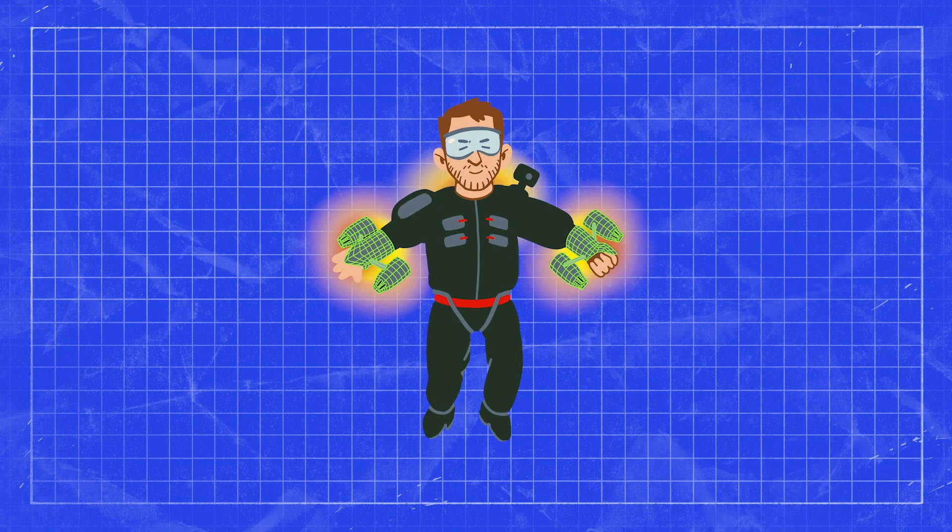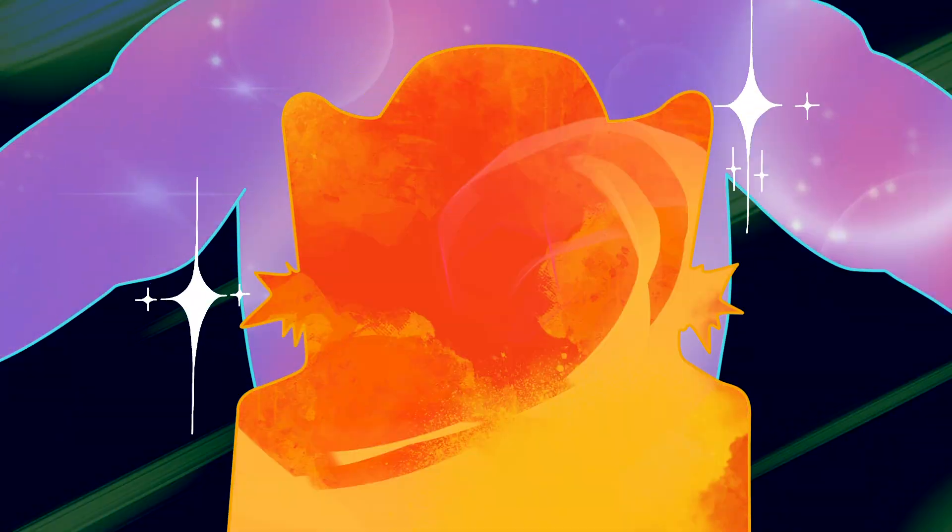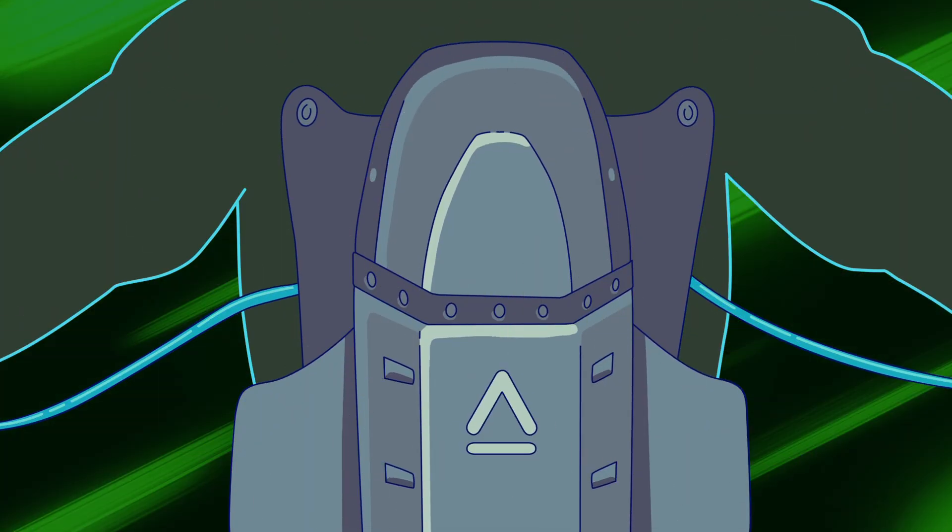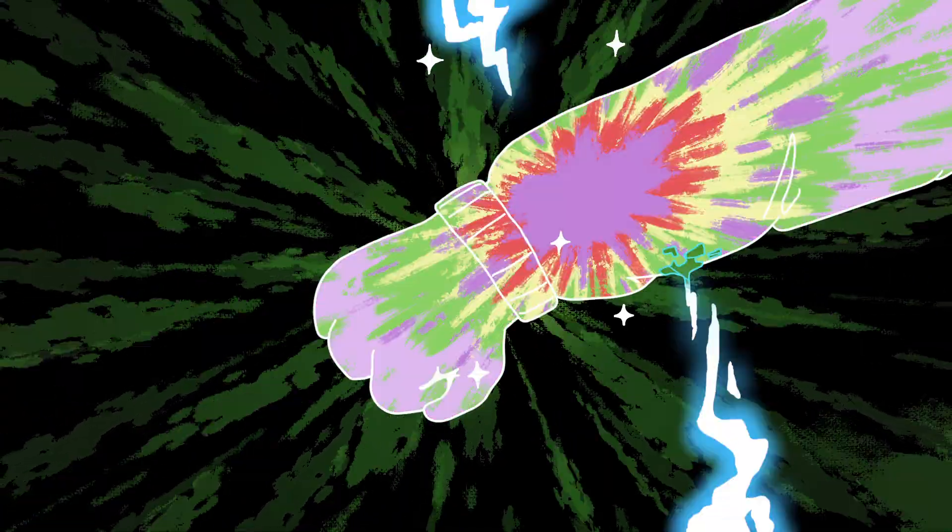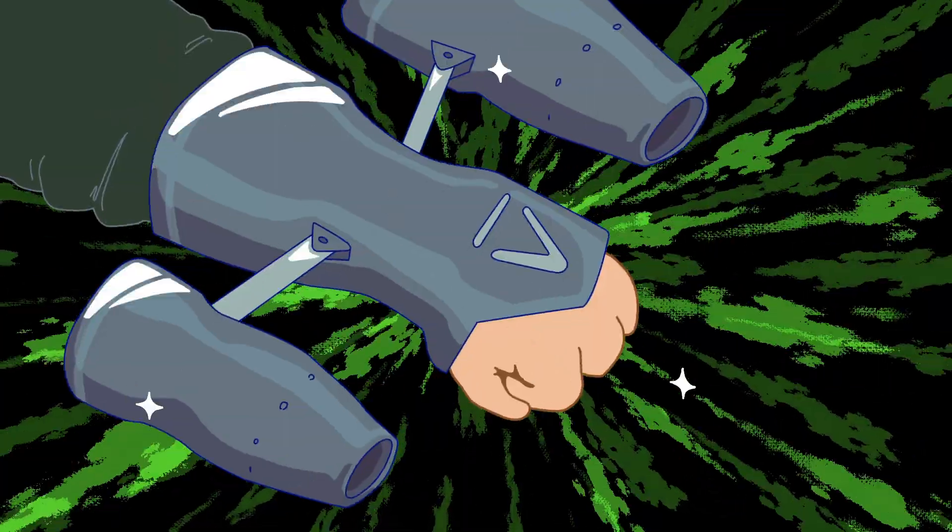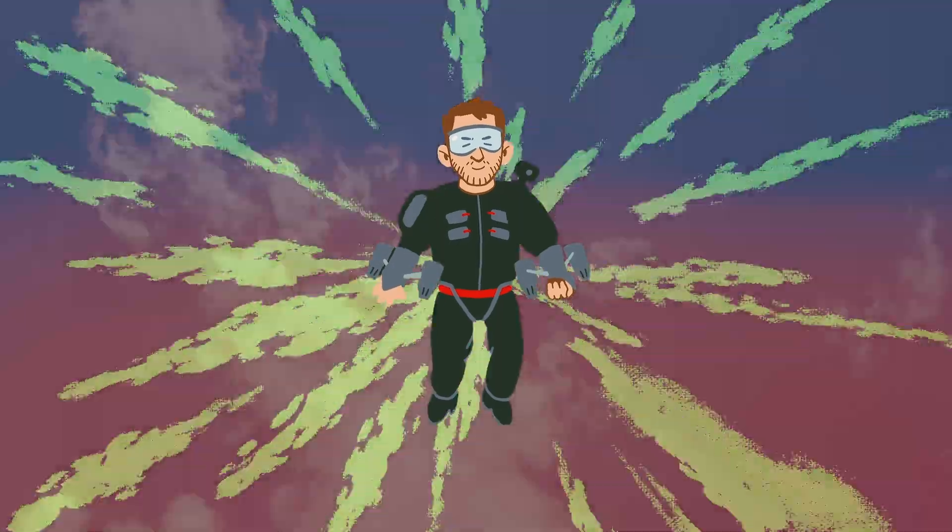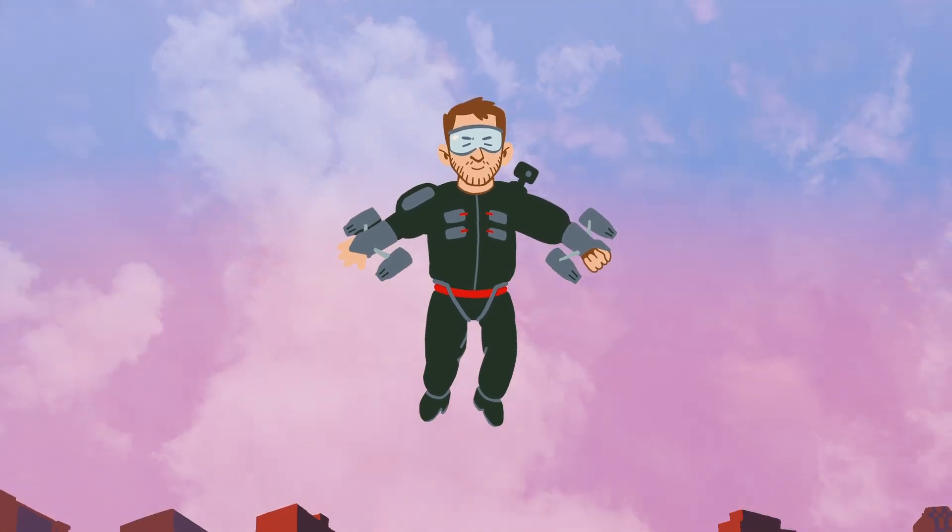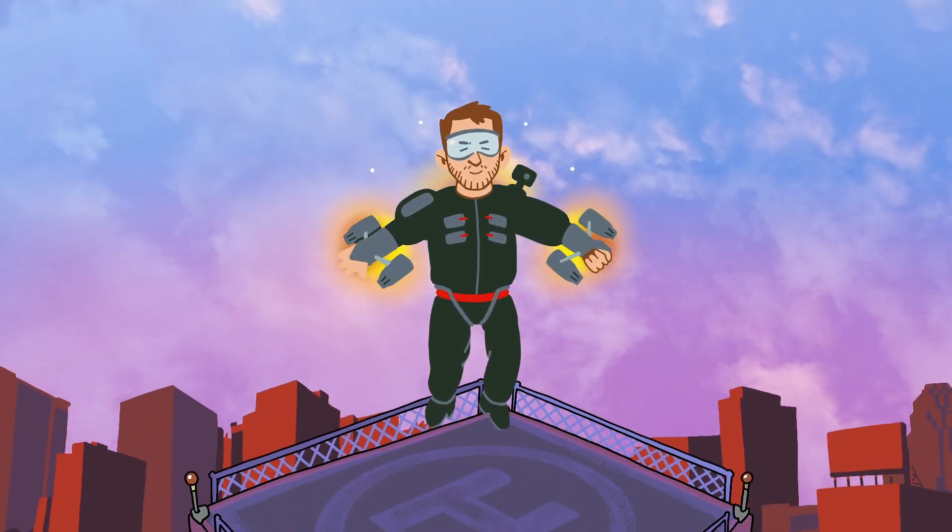In addition to a single engine strapped to the back, this so-called jet suit involved a pair of micro-engines on each arm to split and balance the thrust. Working with the back engine, these provided three points of stability,